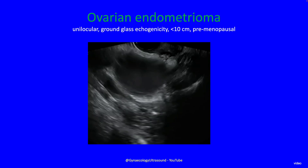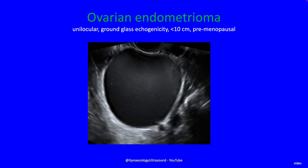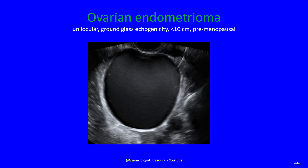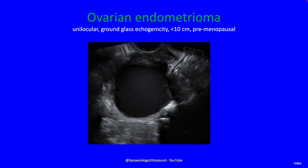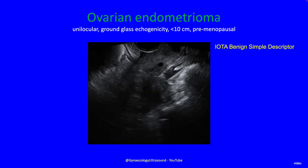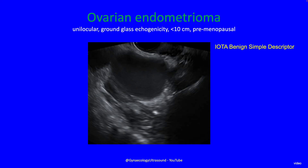So just to confirm: an endometrioma is unilocular, ground-glass echogenicity, less than 10 centimetres, premenopausal, and it's a benign simple descriptor.